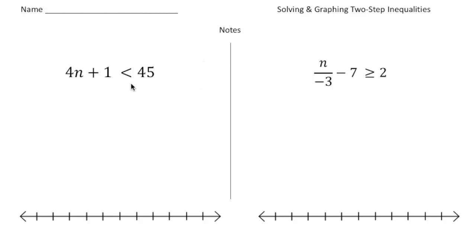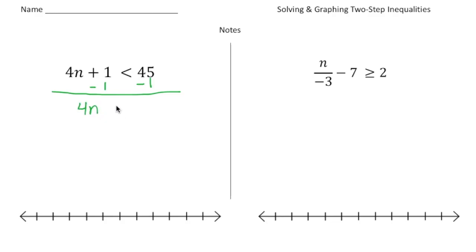Take a look at the first problem: we have 4 times a number plus 1 is less than 45. You solve this inequality just like you would an equation. First we want to take away the constant, so we're going to subtract 1 from both sides. That gives us 4n is less than 44. Then divide both sides by 4, and we get n is less than 11.